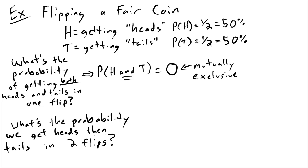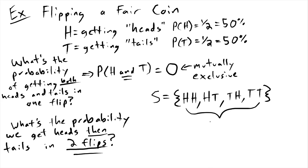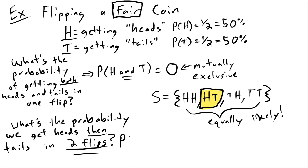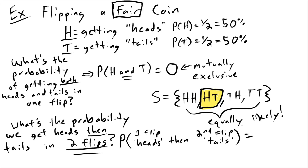Another type of question we might ask: what's the probability we get heads then tails in two flips? We're talking about two flips of a fair coin, so what's the sample space? It is four ordered pairs, all equally likely outcomes. The probability that the first flip is heads then the second flip is tails is one way out of four, so that probability is one out of four. That's just counting.